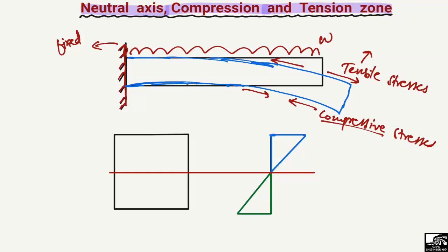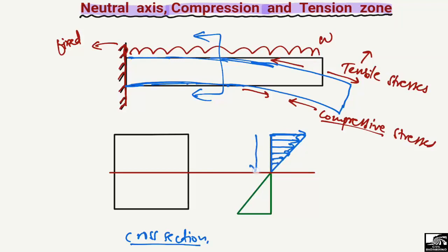Now if we have to define the zones and the neutral axis for a cantilever beam — at the top there will be tension. If I draw this, the maximum tensile stresses will be at the top section of the beam. This is the cross-section of the cantilever beam if I cut it at the mid section. At the top we have maximum tensile stresses, and then they decrease with depth until there is a point of zero stress in the beam.